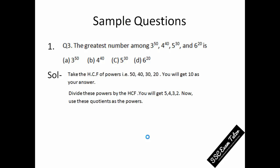In this case, dividing the powers by HCF: 50 by 10, you will get 5; 40 by 10, you get 4; 30 by 10, you get 3; and 20 by 10, you get 2. So put these quotients as the powers.